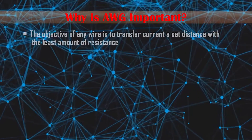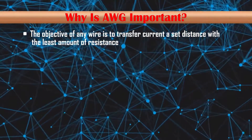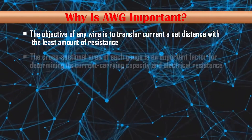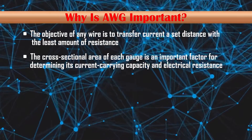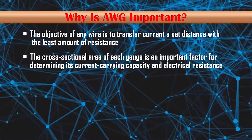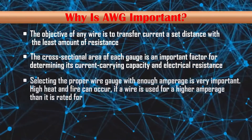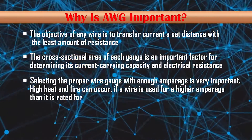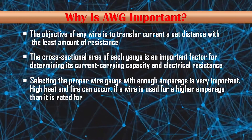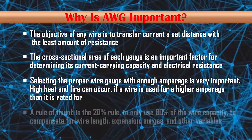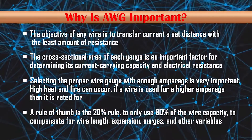The objective of any wire is to transfer current a set distance with the least amount of resistance. The cross-sectional area of each gauge is an important factor for determining its current carrying capacity and electrical resistance. Selecting the proper wire gauge with enough amperage is very important — high heat and fire can occur if a wire is used for a higher amperage than it is rated for.